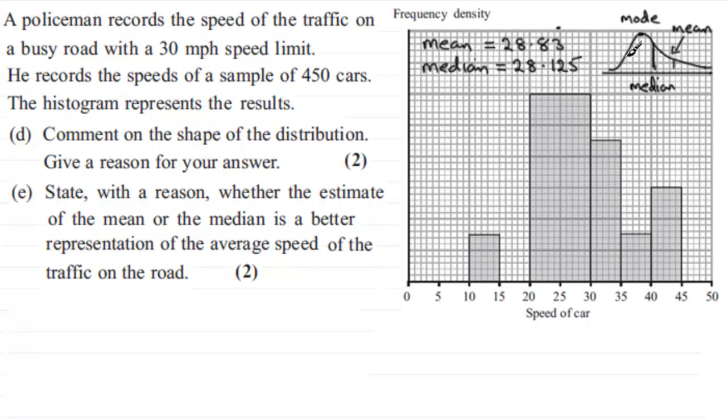When that happens, we've got positive skew. So for part D, it has to be positive skew. Let's write that in, positive skew. And the reason is that the mean is greater than the median.